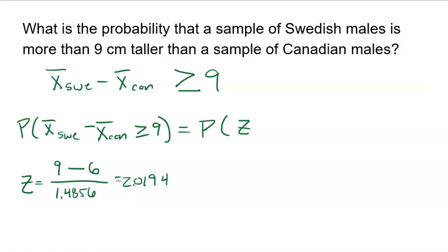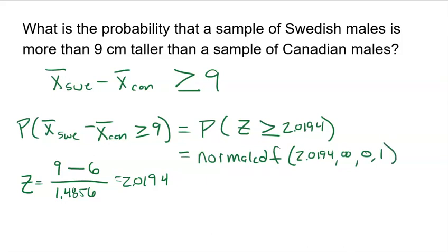Now asking the question about a difference being greater than nine is the equivalent to asking about a Z-score being greater than or equal to 2.0194. To do that on my calculator, I am going to need normal CDF, and I'm going to start at that Z-score, and I'm going to go all the way towards infinity, which on my calculator, I don't have an infinity, but I'm going to use 99. Mean of zero, standard deviation of one. So if you do that on your calculator, it is 0.0217. So about a 2.2% chance that the sample from Sweden comes back nine centimeters or more than the sample from Canada.